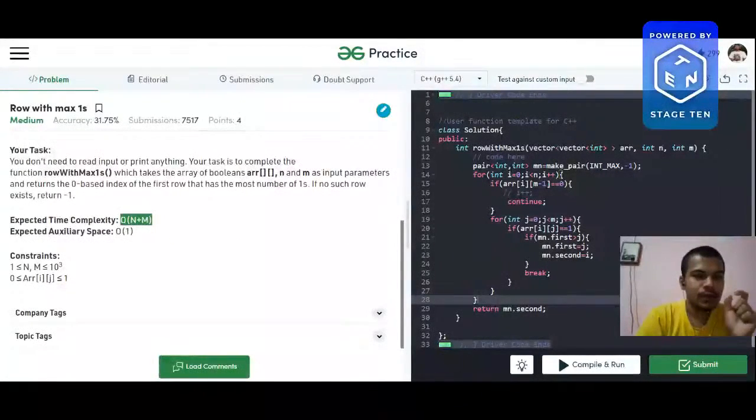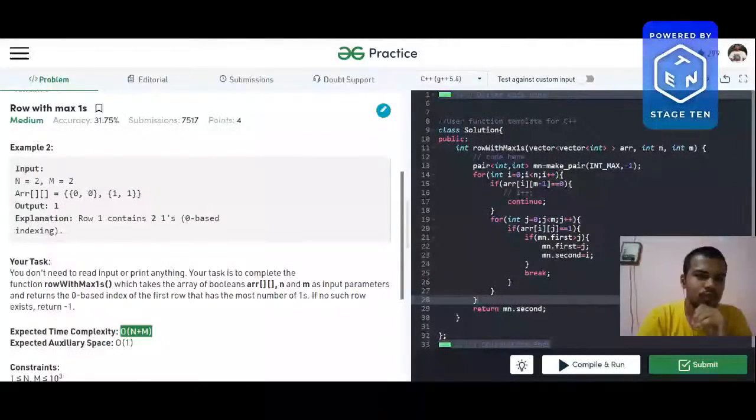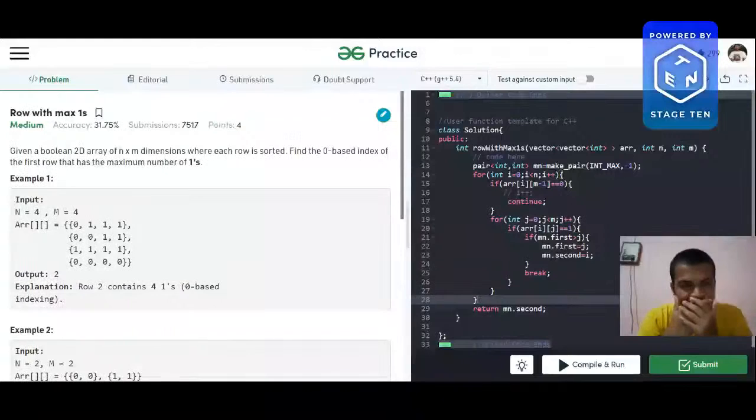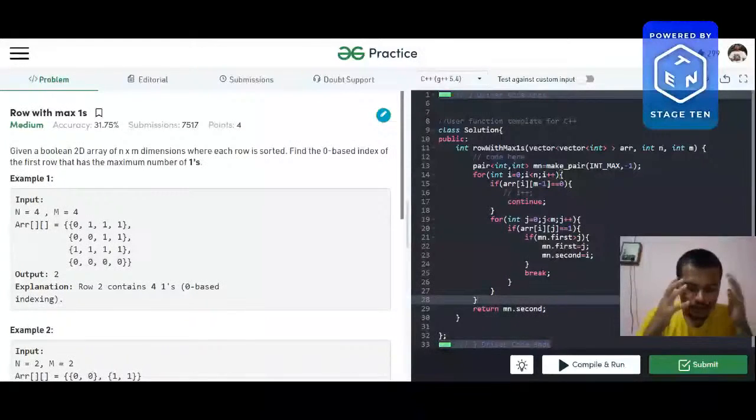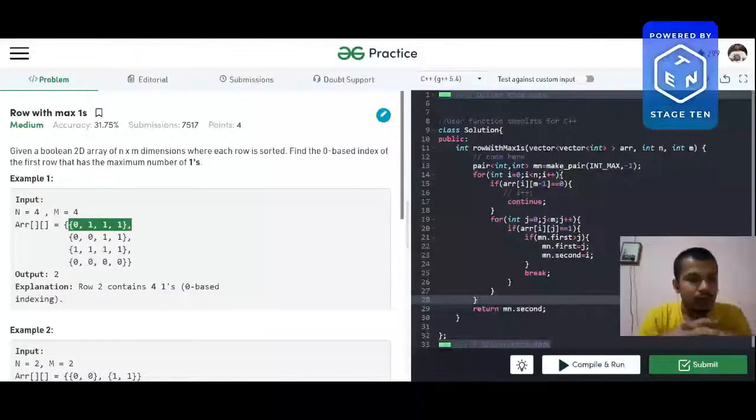So what one can do is use my logic here. You traverse each and every row and find the first occurrence of one. Find the starting point from where the one is starting.